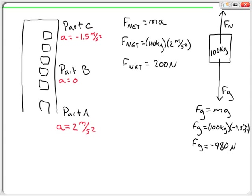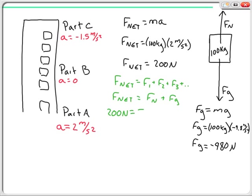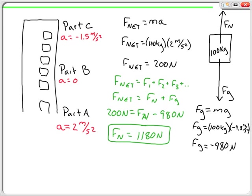F net is equal to positive 200 newtons. Now I switch over to my other equation: F net is the sum of forces, F1 plus F2 and so on. In this case, my forces are defined by FN plus FG. So 200 newtons equals FN minus 980 newtons. Doing the arithmetic, FN is equal to 1180 newtons. That is my answer for Part A.